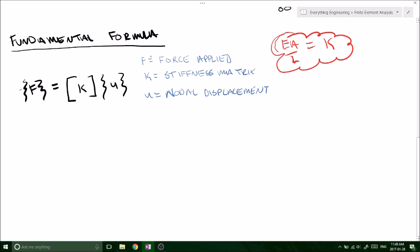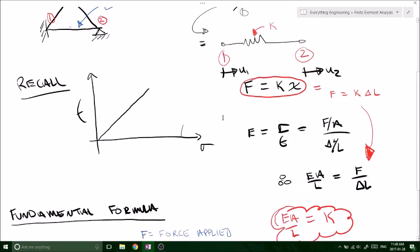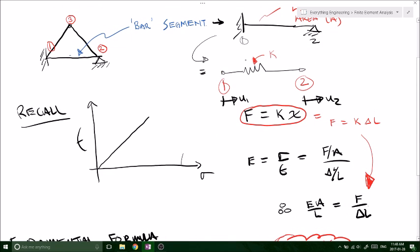Okay, so force applied is the applied force at any one of the nodes shown on your diagram. So here we've got, in this particular segment that we've isolated, we've got node 1 and node 2. So there's going to be a potential to have an F1 and an F2.